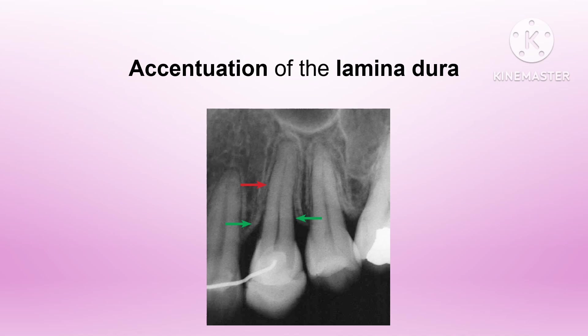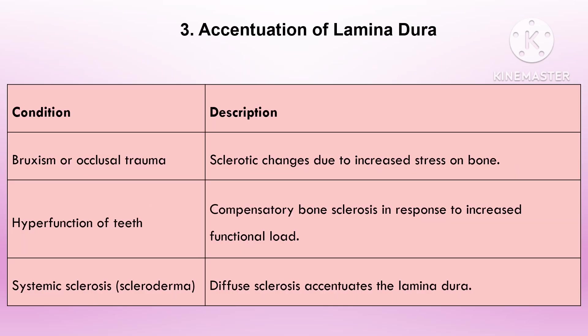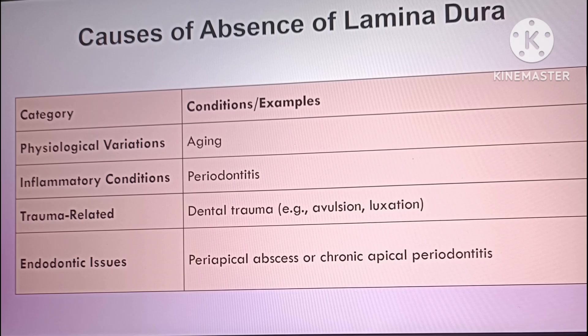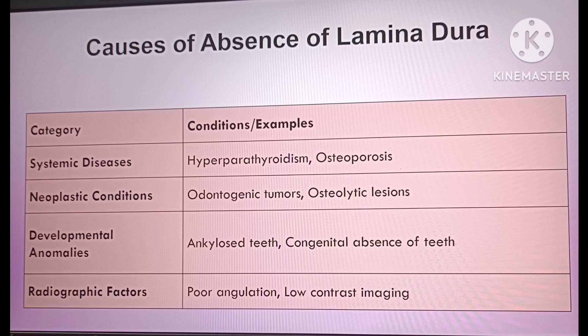The lamina dura may also appear interrupted or irregular on x-ray. Periapical infections, including abscesses or granulomas, can lead to focal loss or irregularity. In some cases the lamina dura may be totally absent — lesions like periapical cysts, odontogenic tumors, or metastatic tumors may erode it. Bone replacement with fibrous tissue, as in fibrous dysplasia, also leads to loss of the lamina dura.